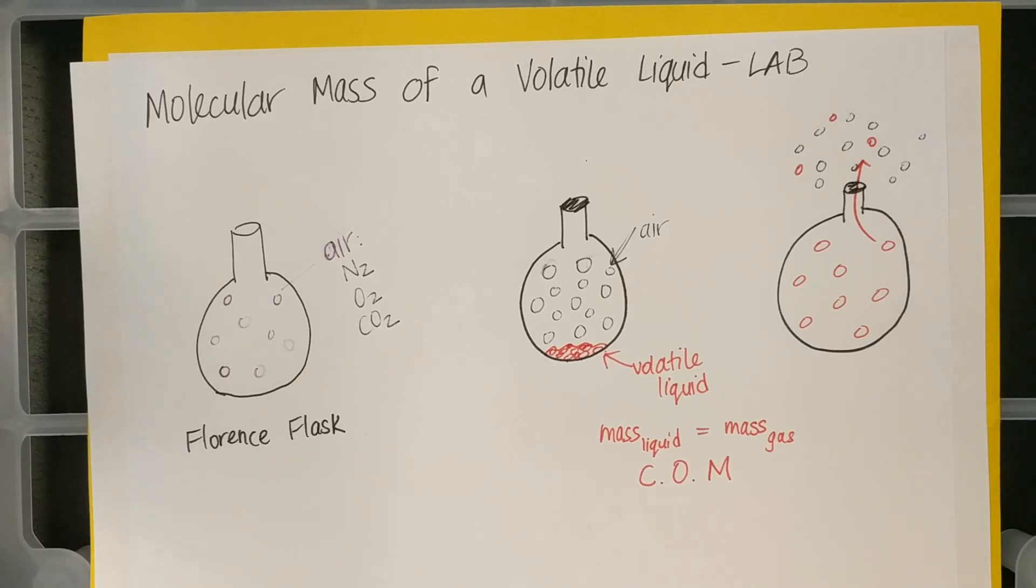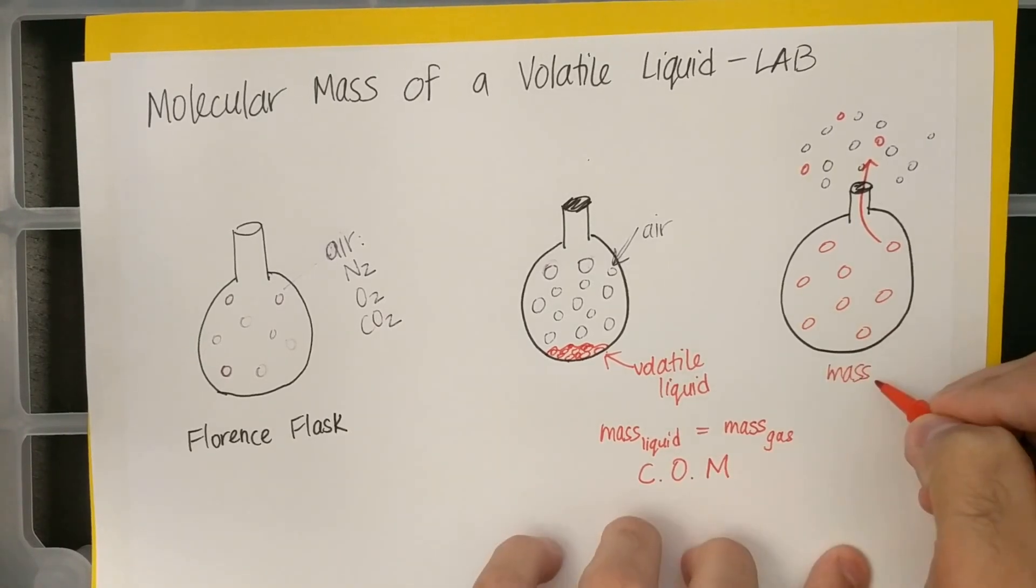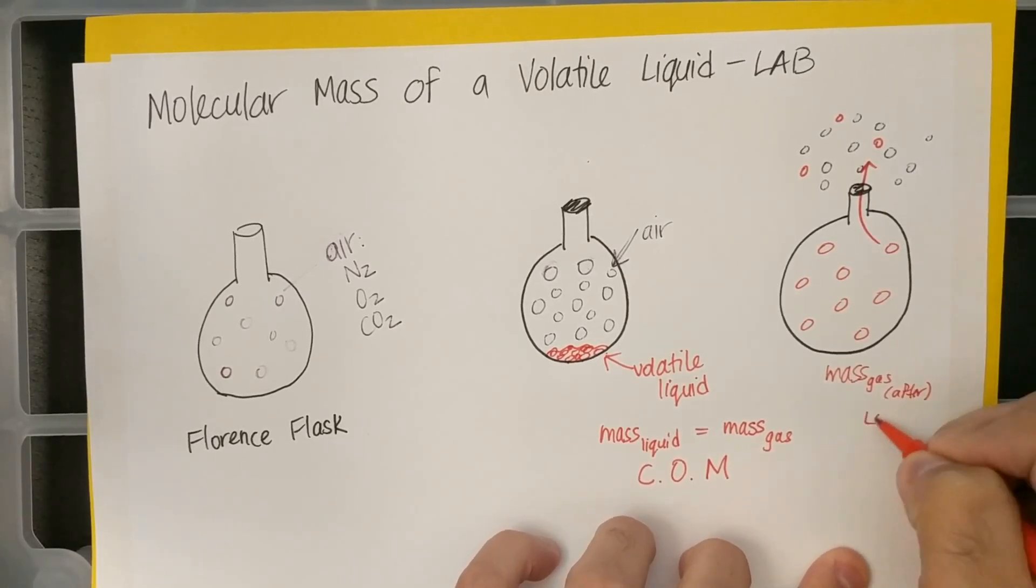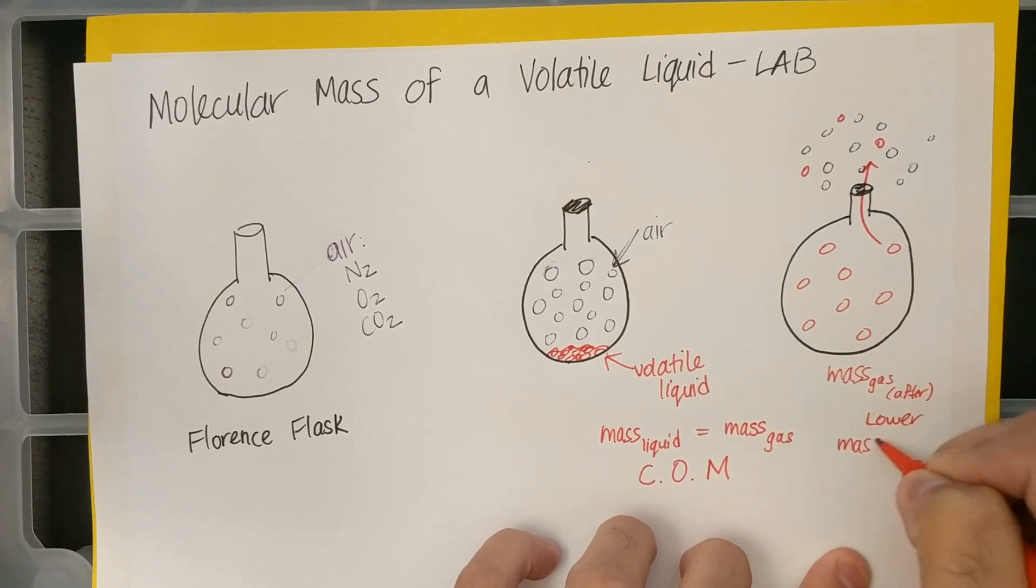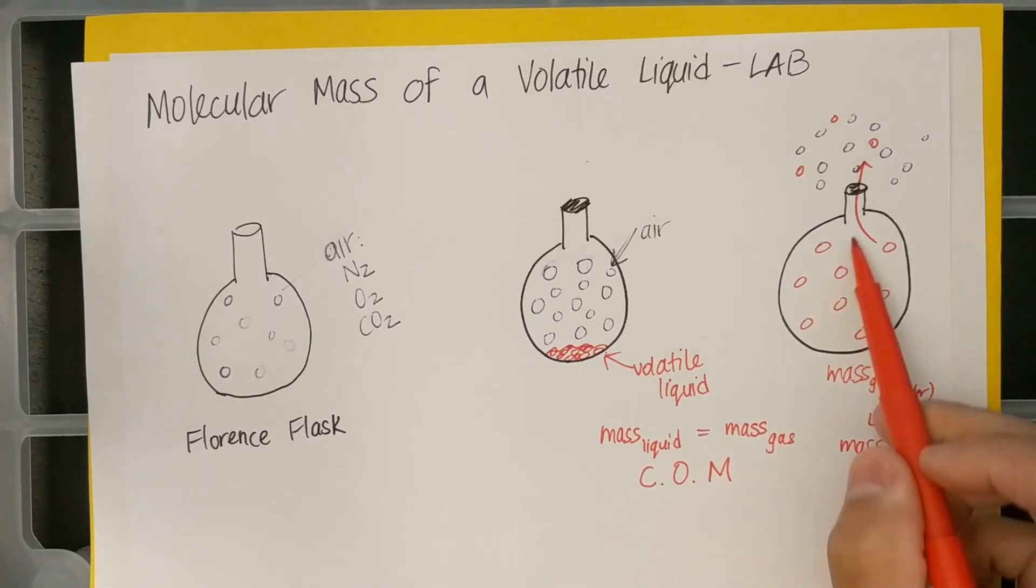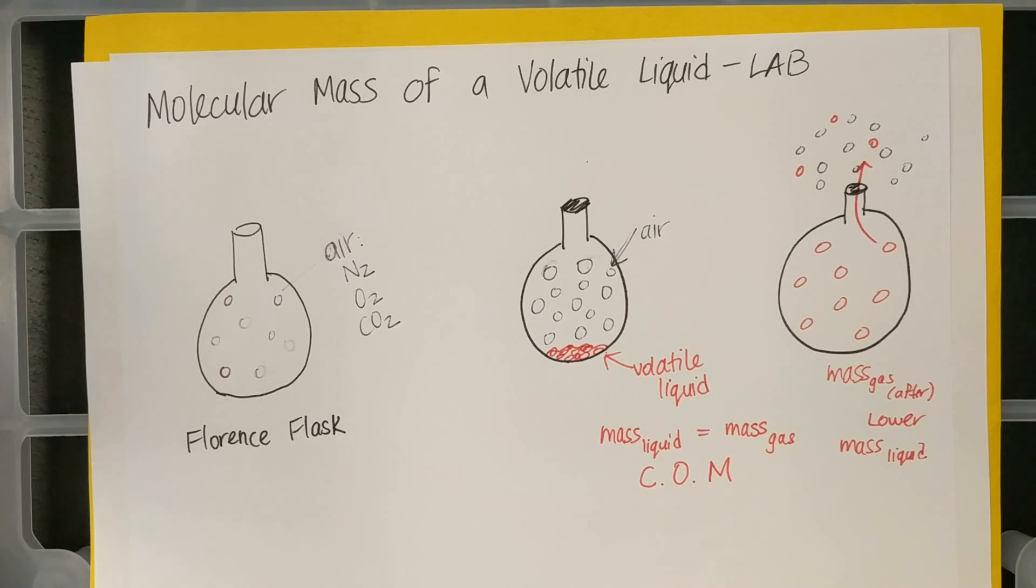So some of you asked, what is the purpose of weighing our flask after? It was to make sure that none of your particles had escaped. And so I'm going to say mass of the gas, and some of you got it being lower than the mass of the liquid. And that was because some of your particles had escaped. And that's okay. You're not wrong. It's just we couldn't tell the moment when all of our air was completely displaced and we just had our volatile liquid that turned into a gas.